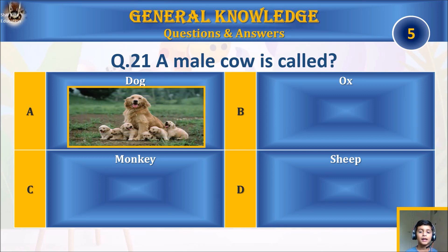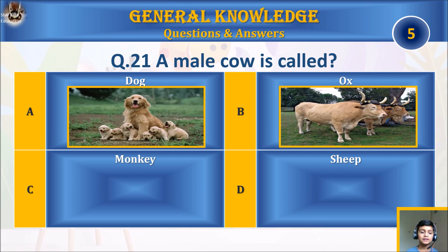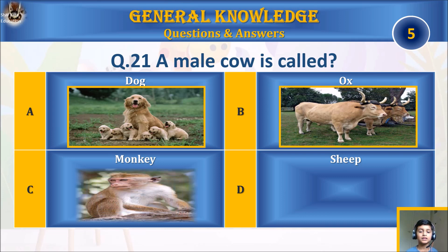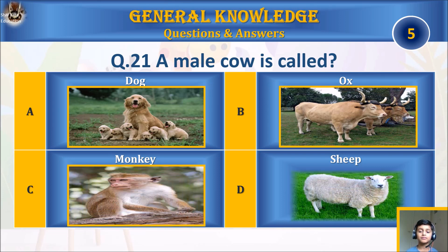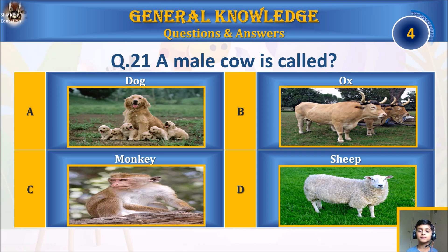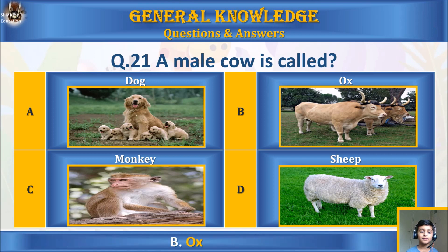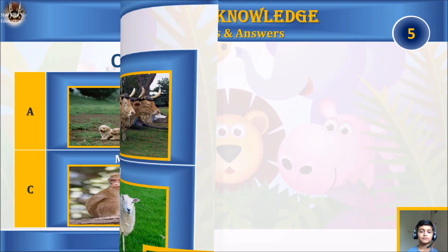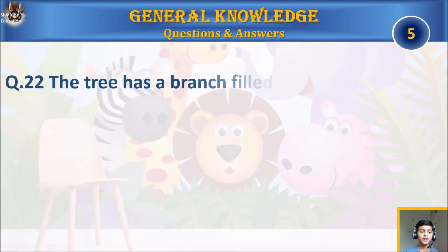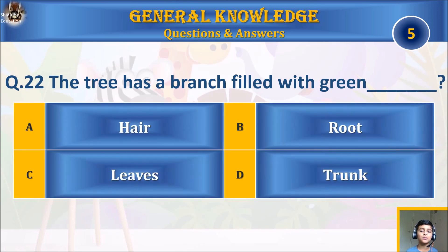Question twenty-one: a male cow is called: A) dog, B) ox, C) monkey, or D) sheep? Your time starts. The answer is B) ox.